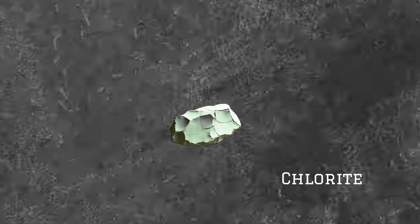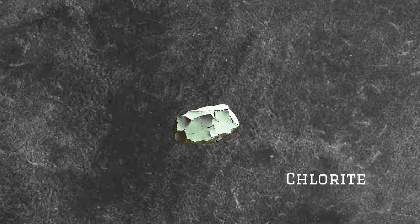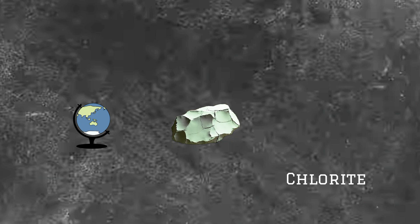Chlorite. Chlorite refers to a group of phyllosilicate minerals, which are often characterized by green coloration and are found in a diverse range of geological settings.